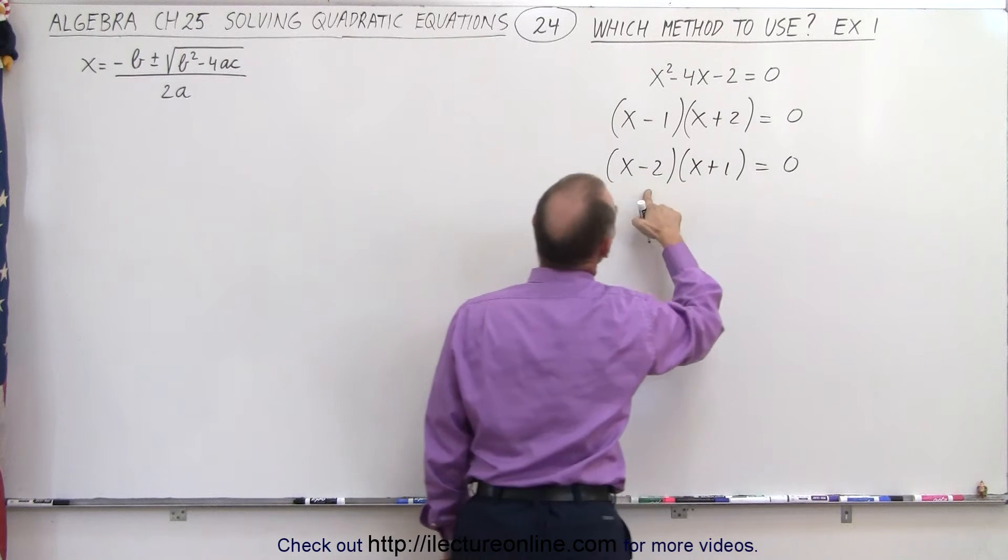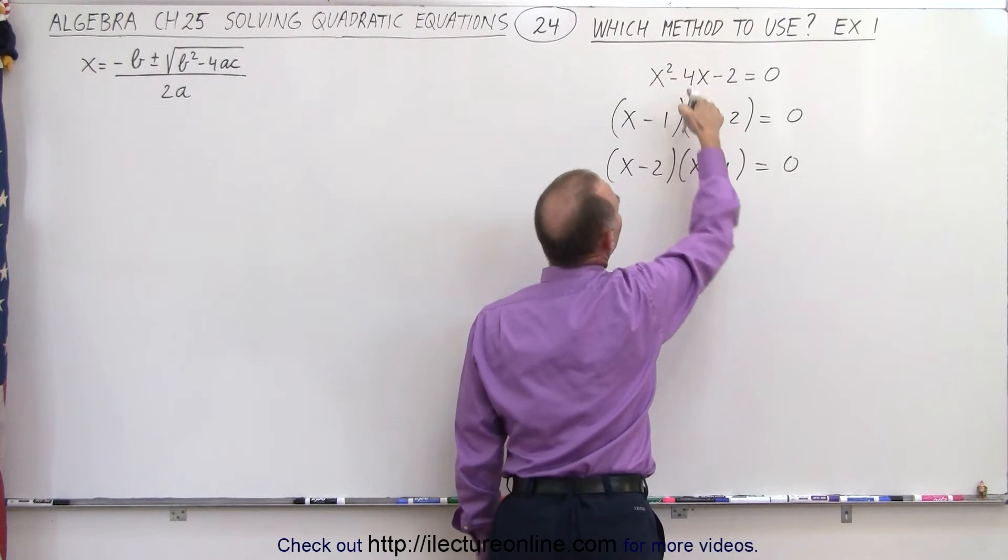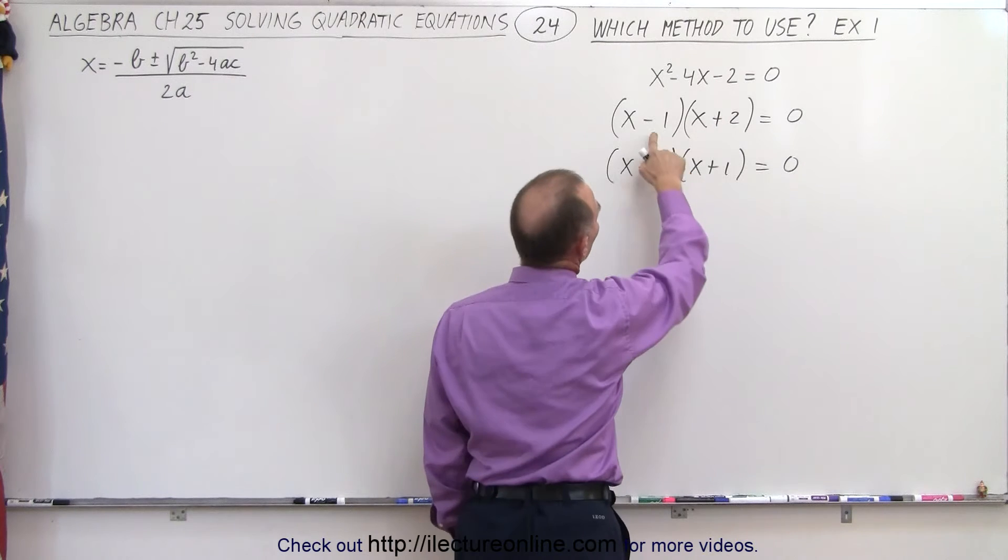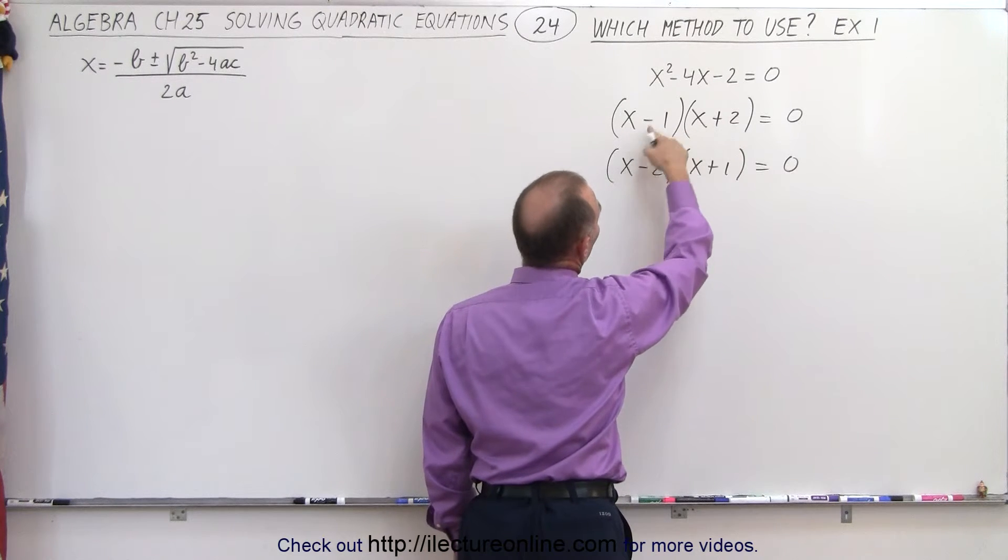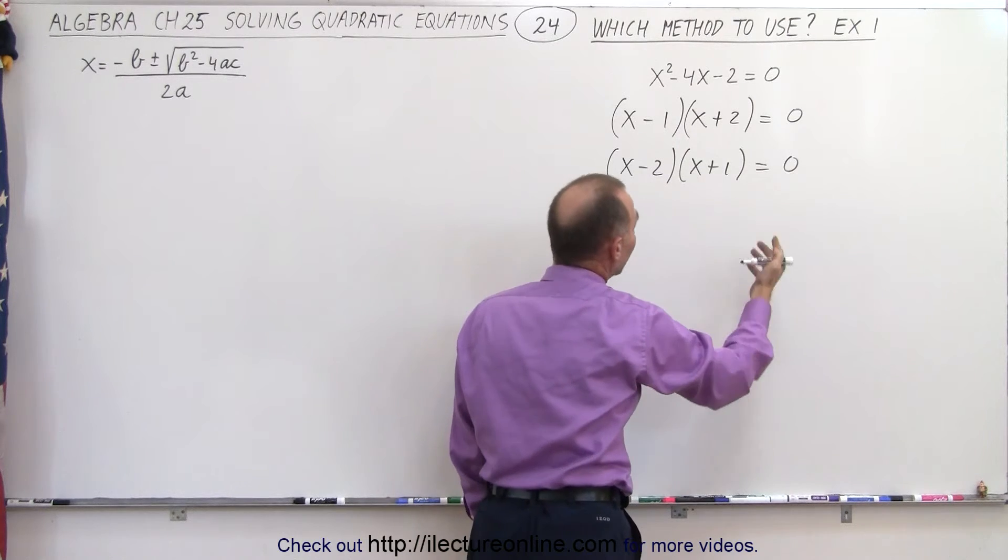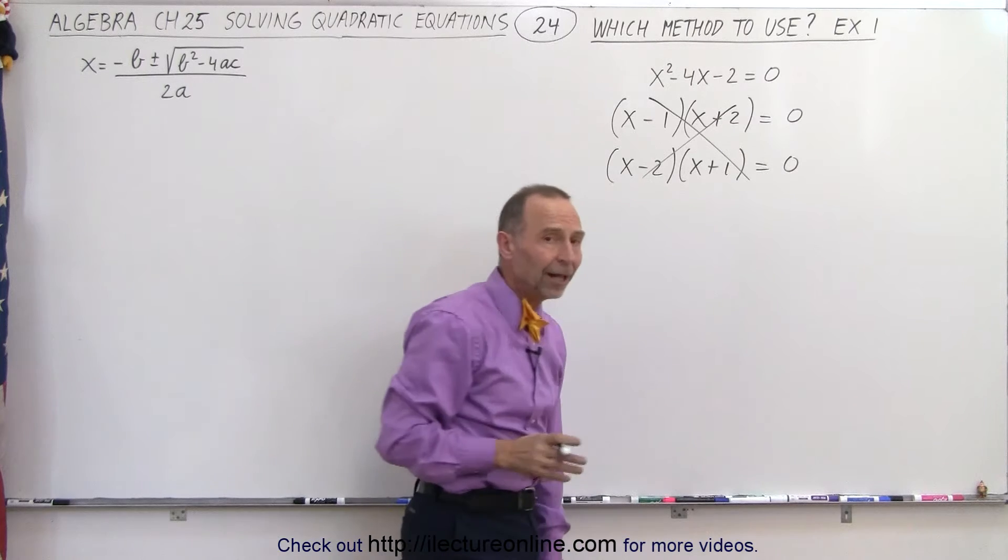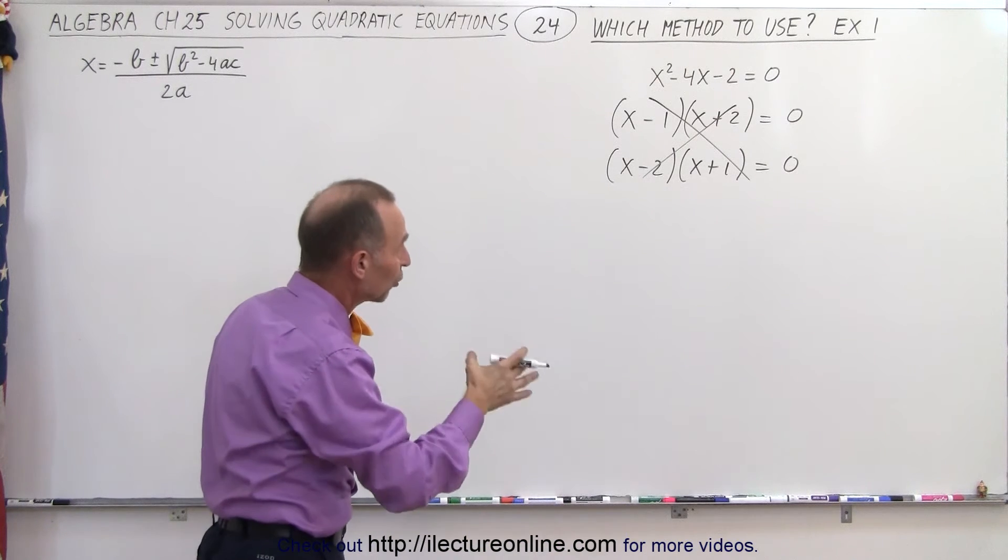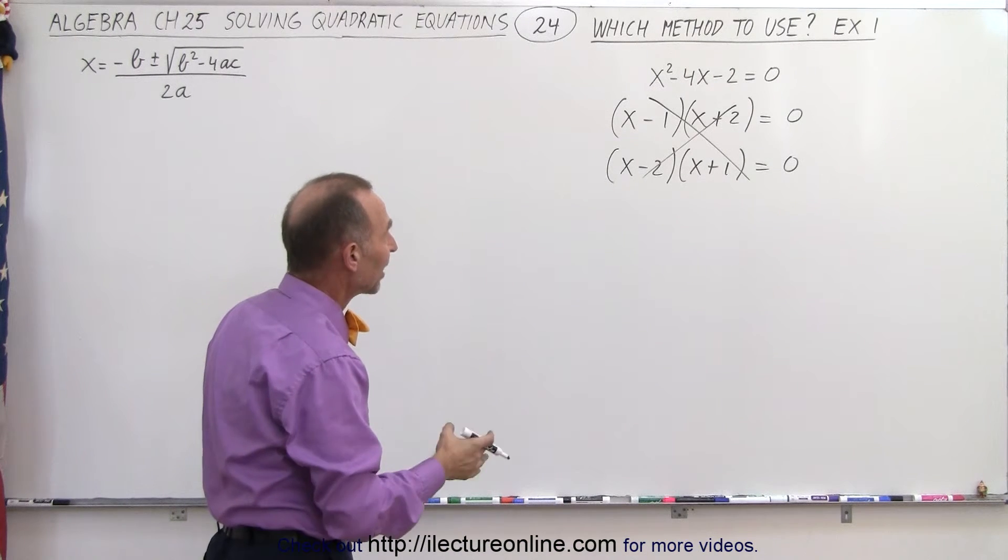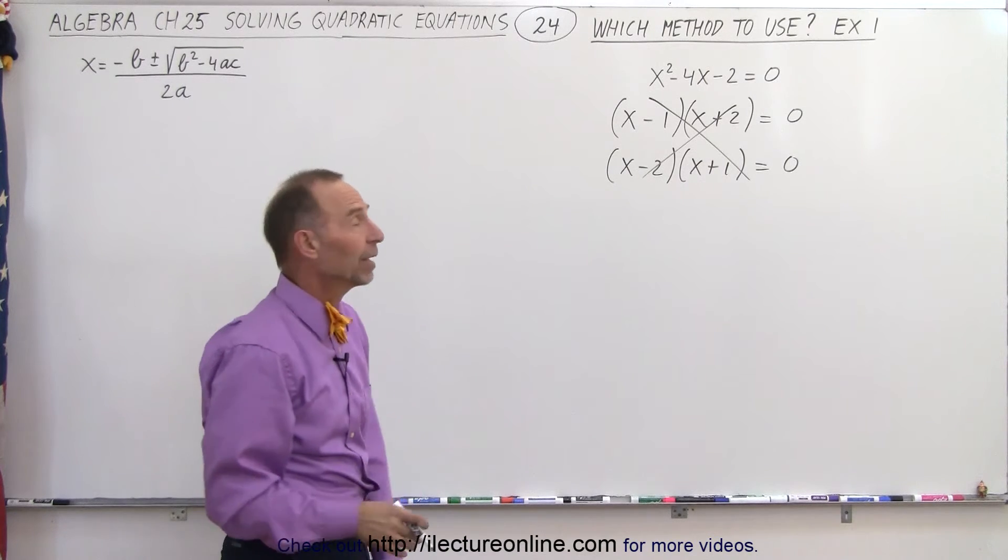So those are the only two possibilities and notice that in neither case am I going to get a minus four x in the middle because this will give us a minus x plus two x which is a plus one x and this gives me minus two x plus one x which is a minus one x. So neither one of these two methods help. In other words, neither one of those two possible ways of factoring it helps so we can't factor it. That's not one of the good methods to use.